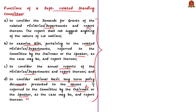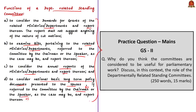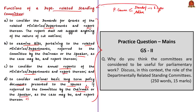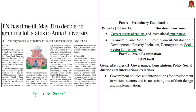To summarize, we have seen about parliamentary committees, two types — standing committees and ad hoc committees — and then six types of standing committees under which we saw departmentally related standing committees in the context of this news article. Now have a look at this practice question. Let us move on to the next news article.